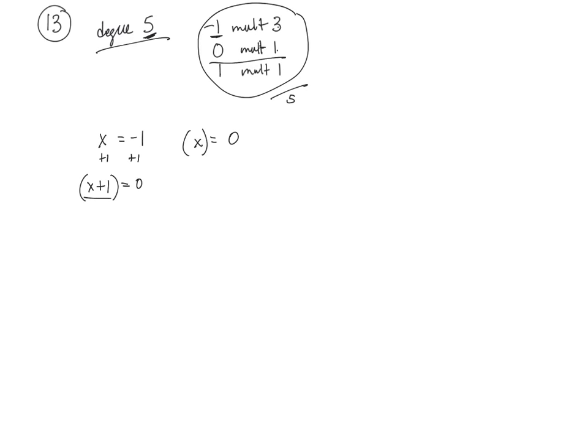And then I have 1 with a multiplicity of 1, so x equals 1. I'll subtract 1 from both sides, so I'll get x minus 1 equals 0. So again, this is a factor.